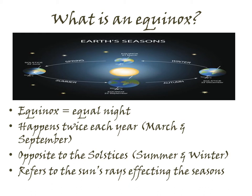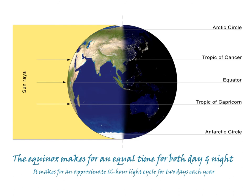Summer solstice has the longest hours of light during the day, and winter solstice has the shortest number of hours of light during the day. In all cases, all four refer to the sun's rays affecting the seasons. The equinox makes for an equal time of both day and night. The sun's rays hit directly on the earth's surface rather than obliquely or indirectly, which we see at solstices and at other times of the year.